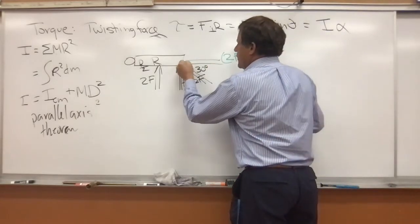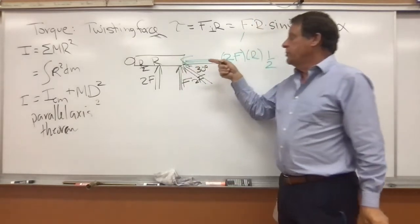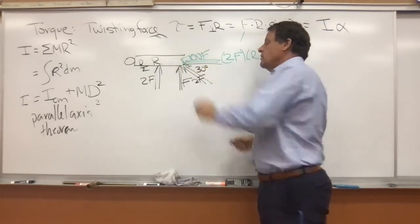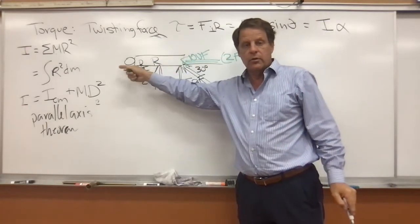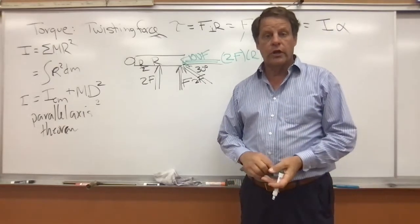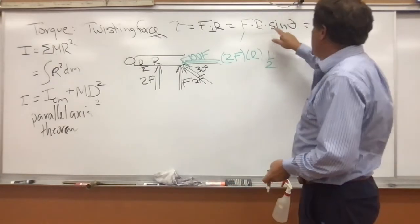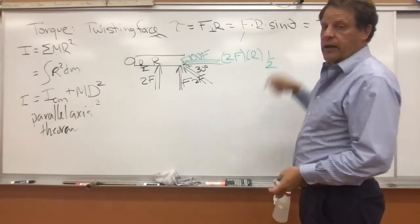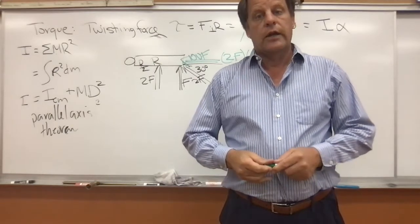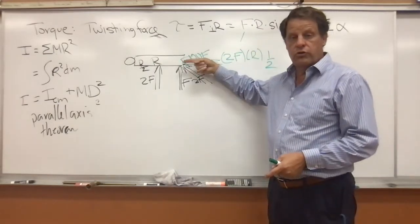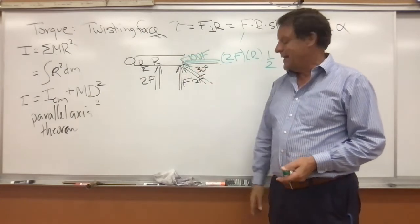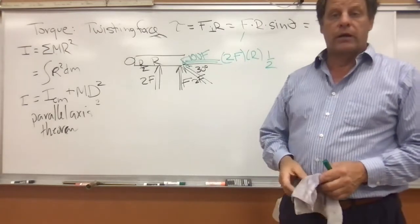If we push with 100 times the force but directed straight toward the hinge, there is no torque at all because the sine of 0 degrees is zero — so 100 times R times sine of 0 equals zero. If you've ever tried to move a door from a very low angle, you realize it produces very little torque.